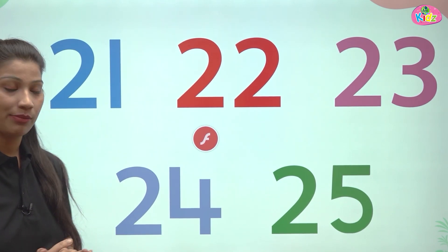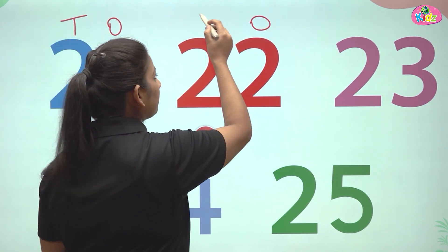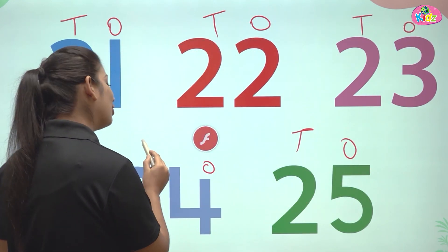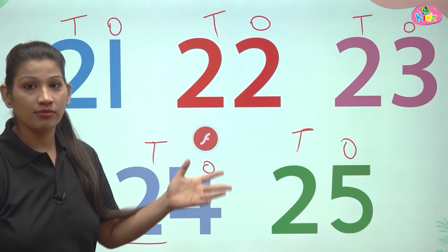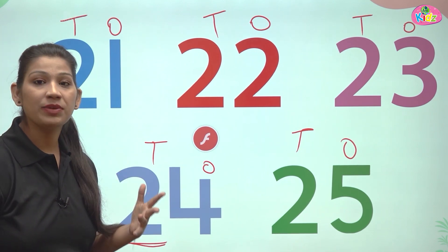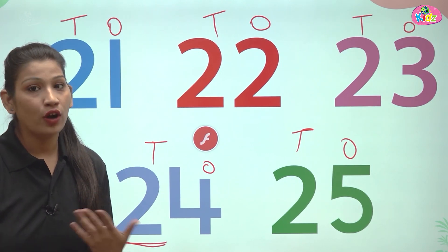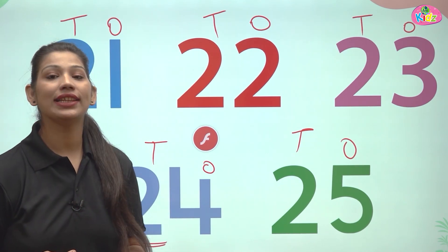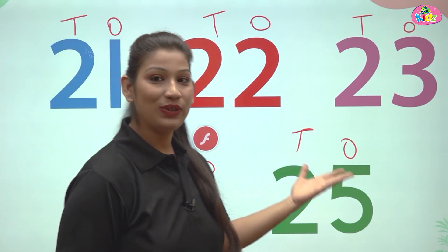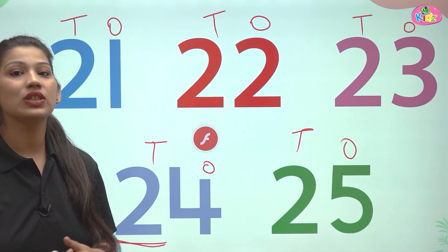All of them are two-digit numbers — they have ones and tens. In these two-digit numbers, the ones place is changing but the tens place is constant. At the tens place, all of these numbers have 2. The ones place numbers are increasing because this is forward counting — in forward counting, numbers increase. 21, 22, 23, 24, and 25.